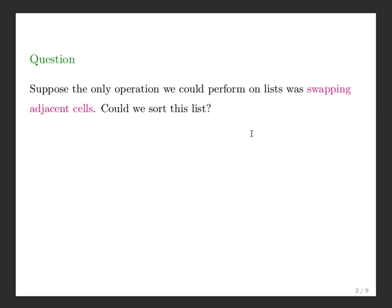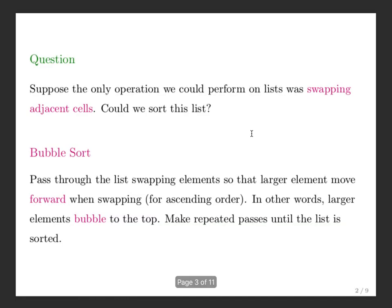So after one scan through the list, after agreeing that we should swap larger terms forward, one pass will mean that one element is sorted at the back. The largest element should have bubbled its way to the top. Second pass, the second element will bubble to the top. Third, the third element. So if we repeat this, eventually the list will be sorted.